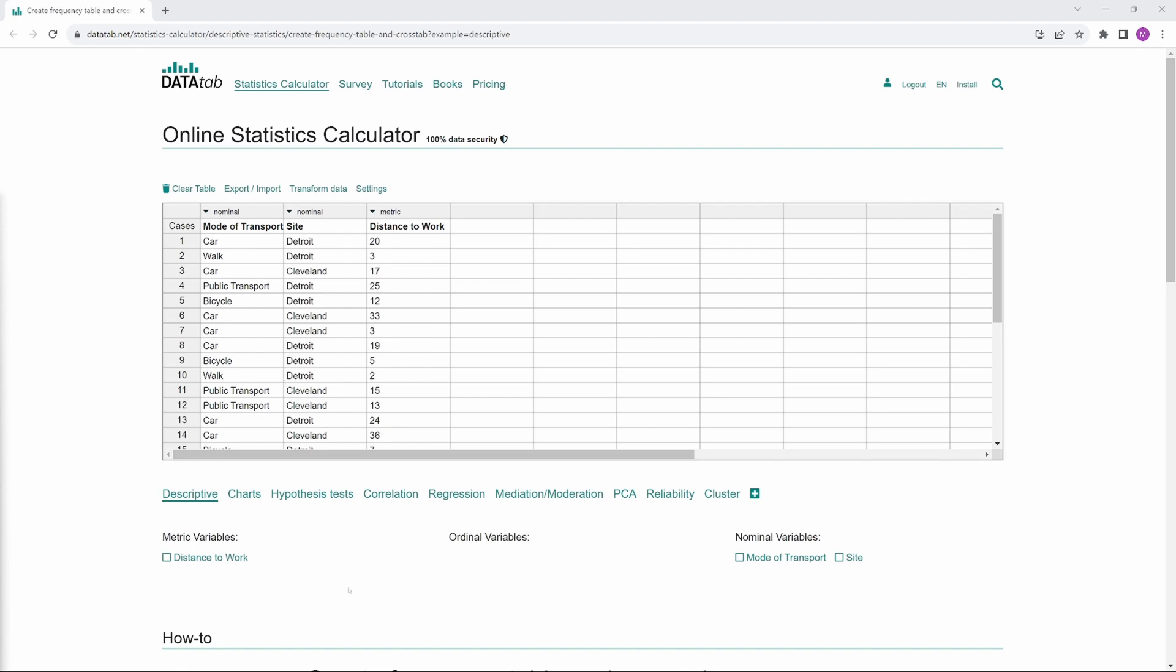Here below you can see the variables distance to work, mode of transport and site. Datadep gives you a hint about the level of measurement, but you can also change it here.